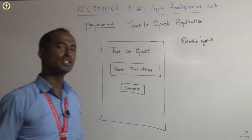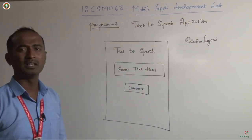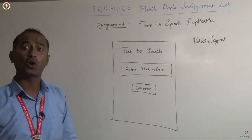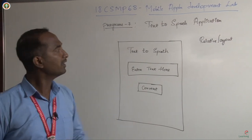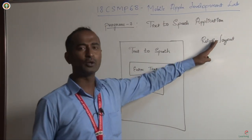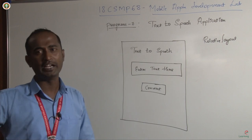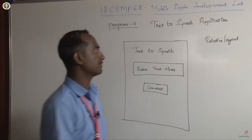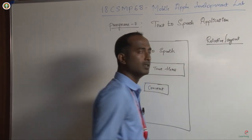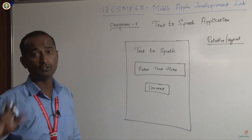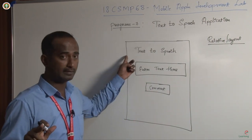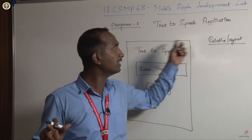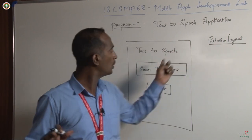One advantage of relative layout: if you are using constraint layout, you have to set the constraints for all four sides. But if you are using relative layout, just setting the constraint for any two sides or relative to the previous component is more than enough. This is the layout I am going to use. It is good practice to fix the layout before you start designing.